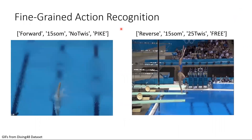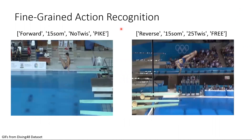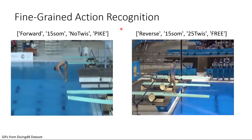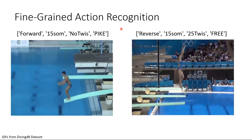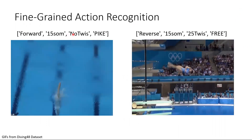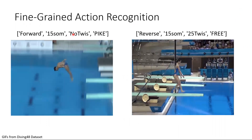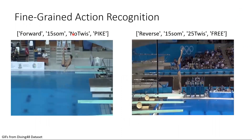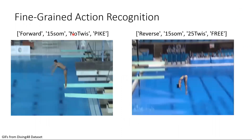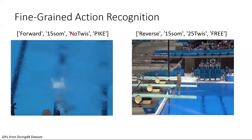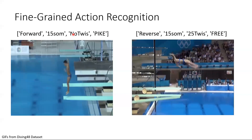Fine-grained action recognition involves distinguishing between similar actions with only subtle differences. For example, we might need to distinguish between the number of somersaults or twists that a diver performs, or other characteristics of the dive. This high interclass similarity in the fine-grained setting makes it a challenging task that coarse-grained backbones often struggle to overcome.